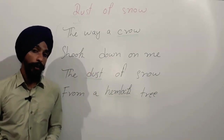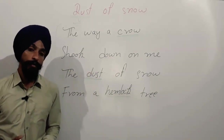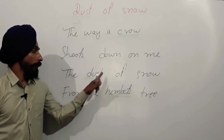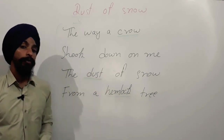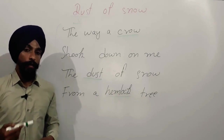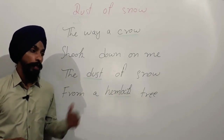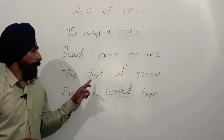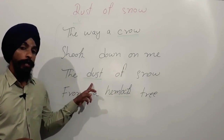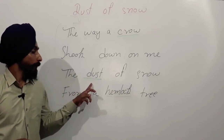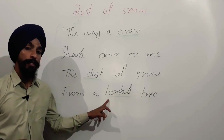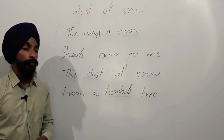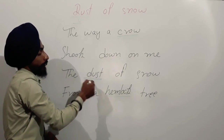Crow is a black bird, and the black crow is a symbol of death. If we talk about dust, it is also a symbol of death. The hemlock tree is a poison tree, so it is also a symbol of death. There are three symbols of death in the first four lines.